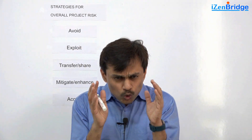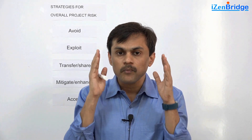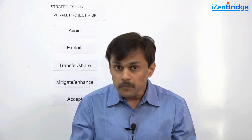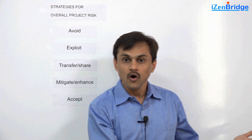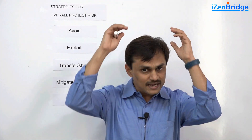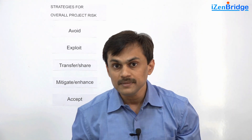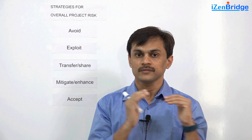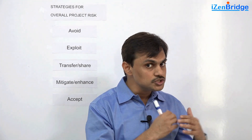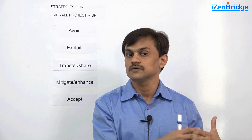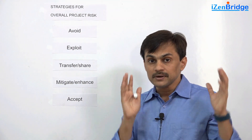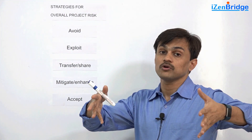Avoid. When you are looking at a project and you realize there is a possibility of losing money rather than making money, one option is that you don't do the project at all, or you change the contract conditions so that at least you don't lose money. You may work on a contract agreement that ensures you will at least recover your cost. So at an overall project level, you do something that removes — rather than just reduces — a particular risk threatening overall project viability.